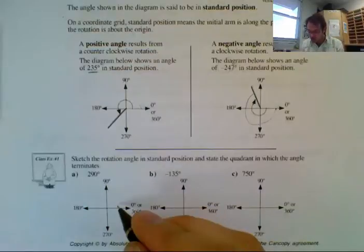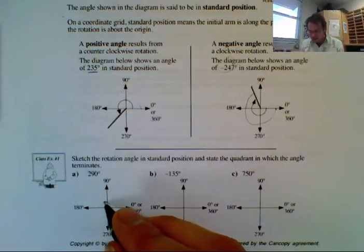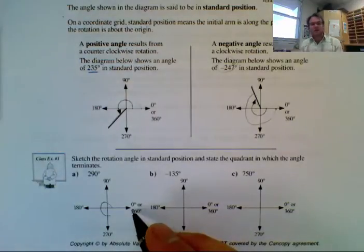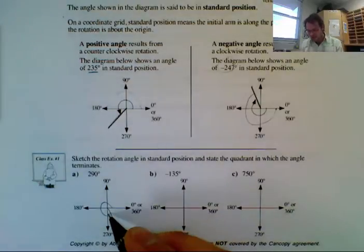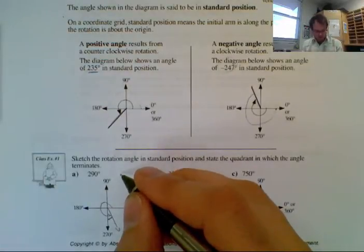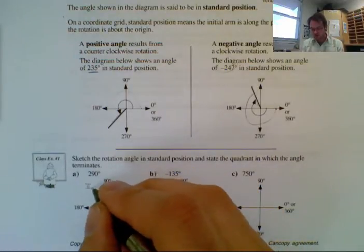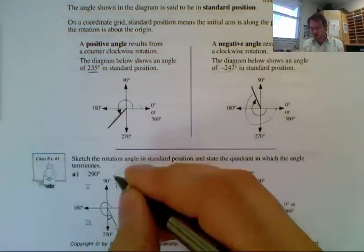So we look at 290 degrees. I keep going: 90, 180, 270, and it's a bit more than 270 but closer to 270. So it's going to be somewhere right there, and it's going to terminate in quadrant 4, because we have quadrants 1, 2, 3, and 4. So it terminates in quadrant 4.